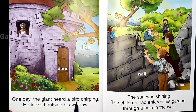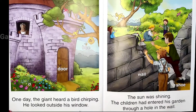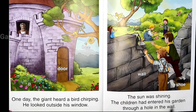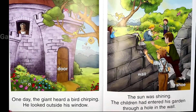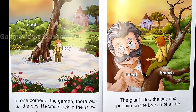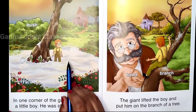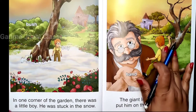One day the giant heard a bird chirping. He looked outside his window — the sun was shining. The children had entered his garden through a hole in the wall. In one corner of the garden there was a little boy who was stuck in the snow and could not get out. The giant lifted the boy and put him on the branches of a tree.